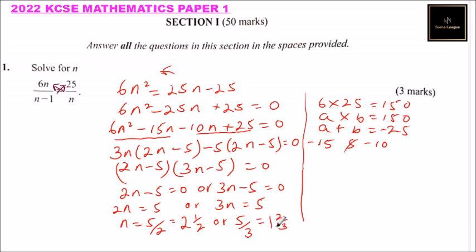So that is how you work out that question. In terms of marks distribution, you get one mark for getting the quadratic equation, you get one mark for factorizing, and one mark for the two answers. So that will total to three marks. That's how you work out that and you'll be able to score three marks.